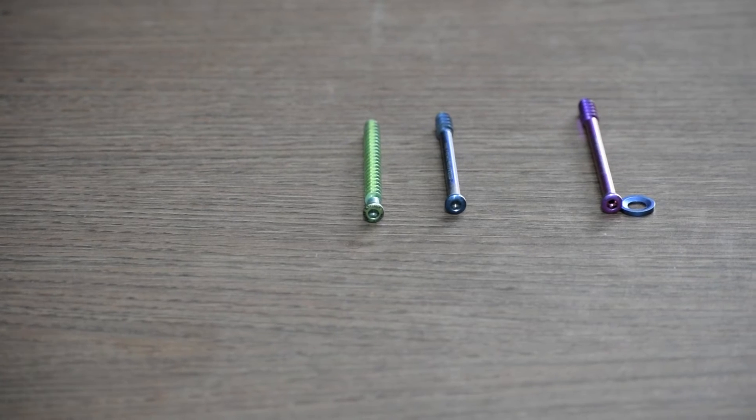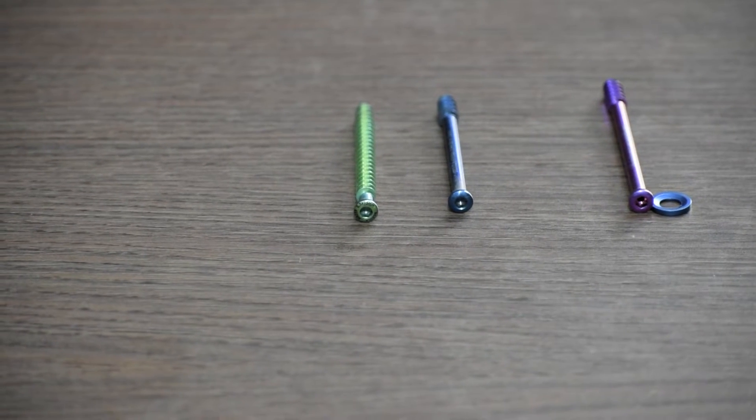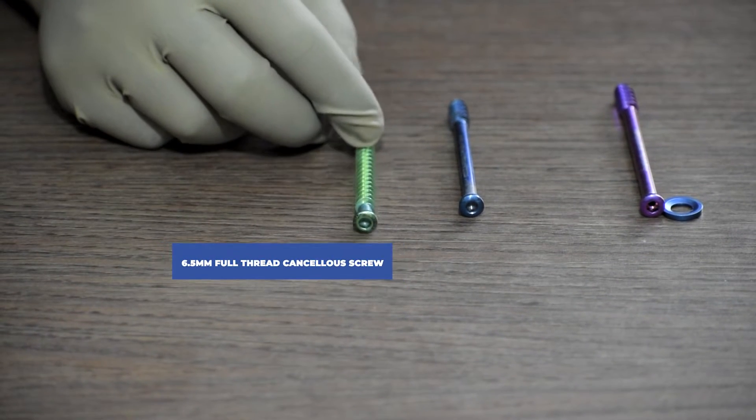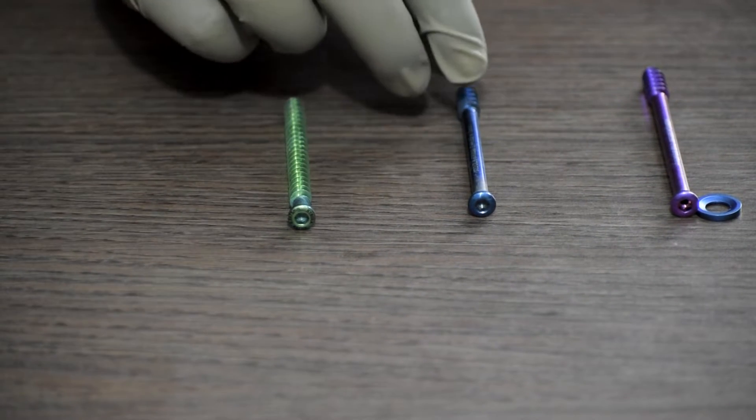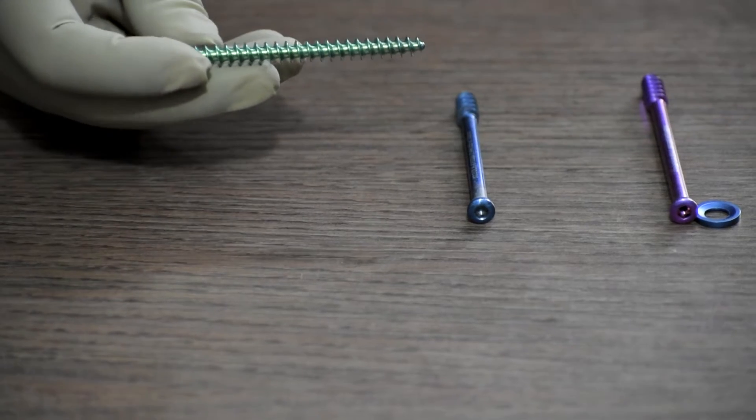So, let us start with all the screws related to this. This one is a 6.5mm full thread cancellous screw. As you can see, it is threaded throughout its length.